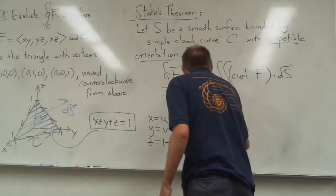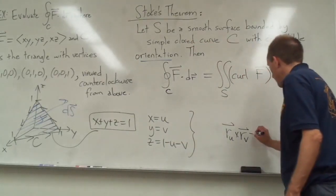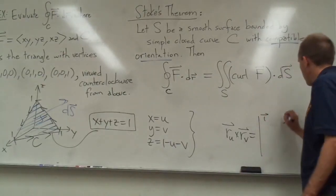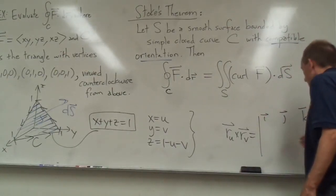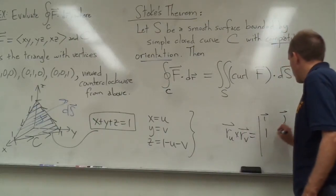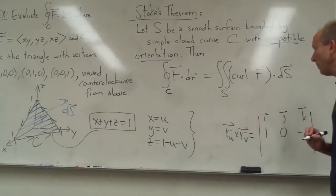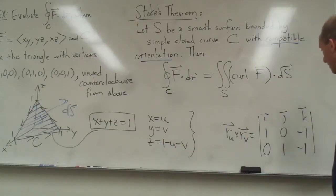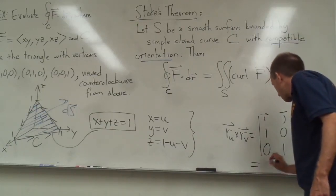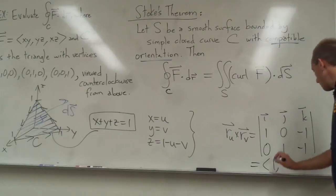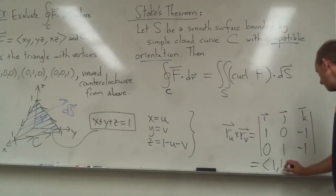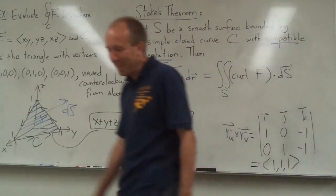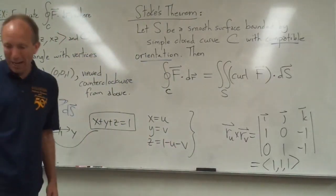Let's calculate r sub u cross r sub v. Setting up the determinant with i, j, k: r sub u is ⟨1, 0, −1⟩ and r sub v is ⟨0, 1, −1⟩. If you work out that cross product, you get ⟨1, 1, 1⟩.